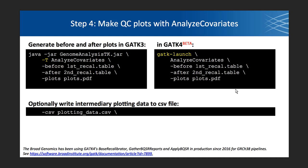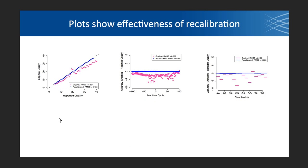To make your QC plots, we have the commands for AnalyzeCovariates. There is not much that has changed between GATK3 and GATK4. One thing you can do is ask the tool to optionally write out the plotting data if you want to plot it with your own plotting methods. The plots will show the effectiveness of recalibration, as you've already seen from one of the earlier slides.